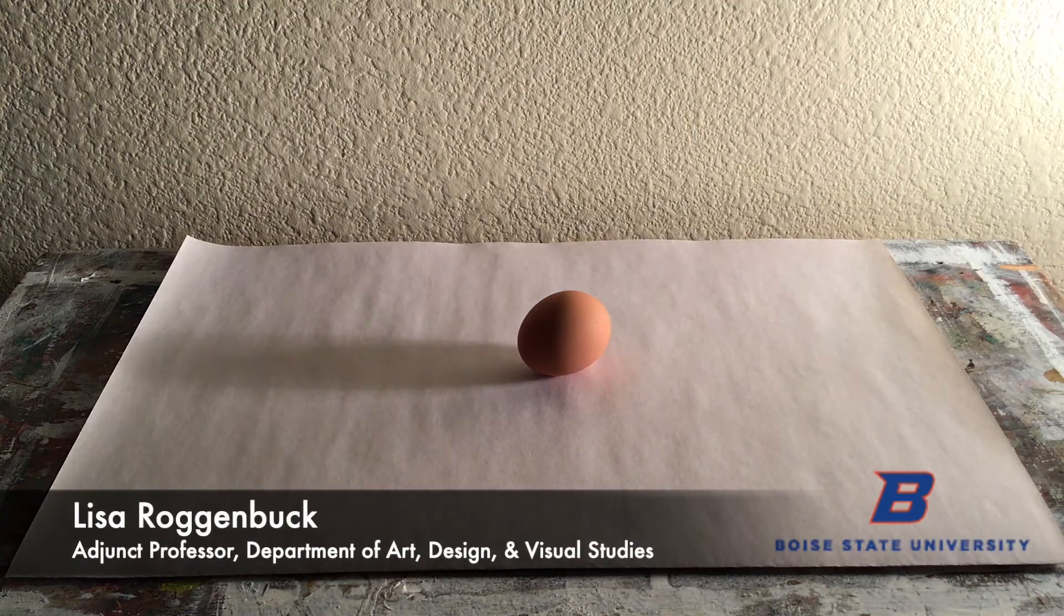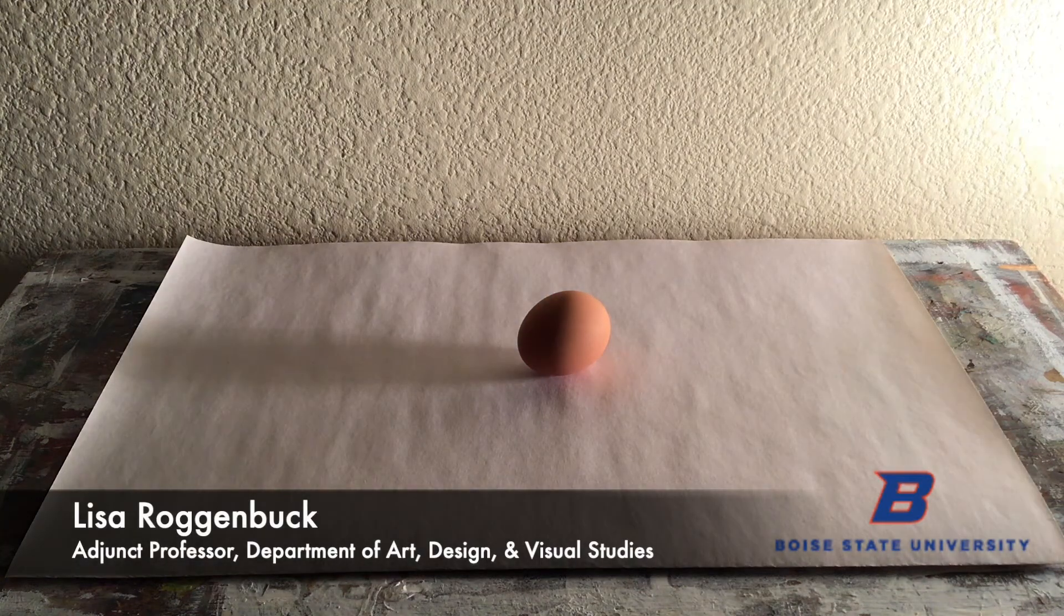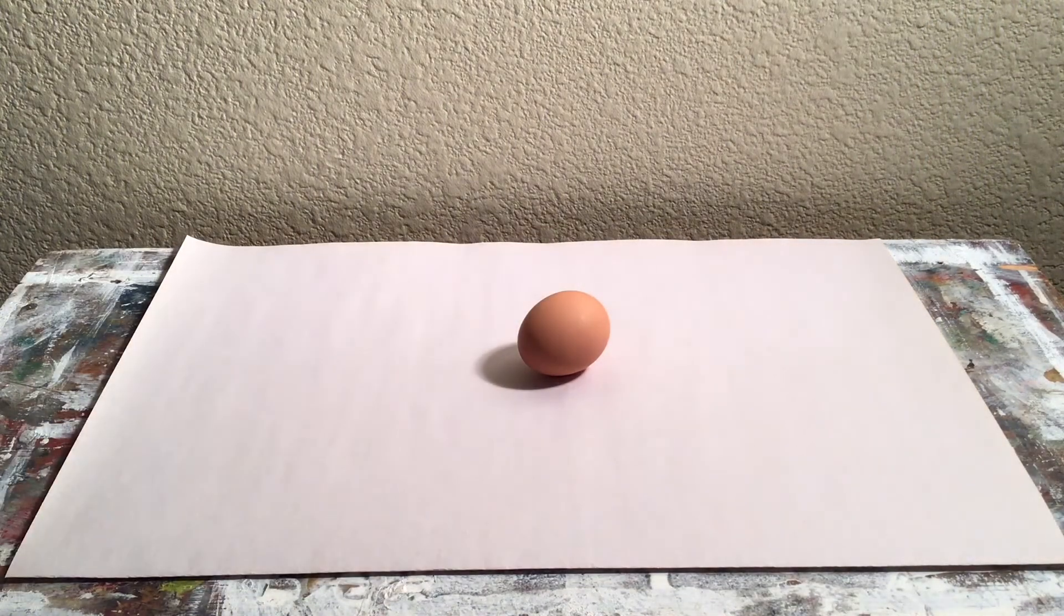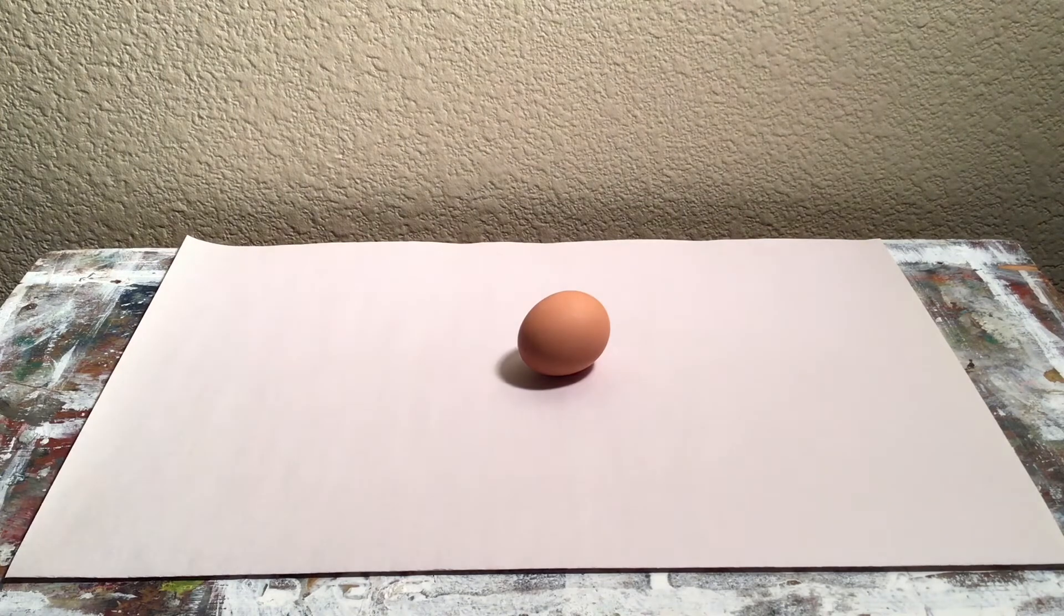In this tutorial, I'm going to identify five key parts of light across an object and how to light a still life for value drawings in my class.